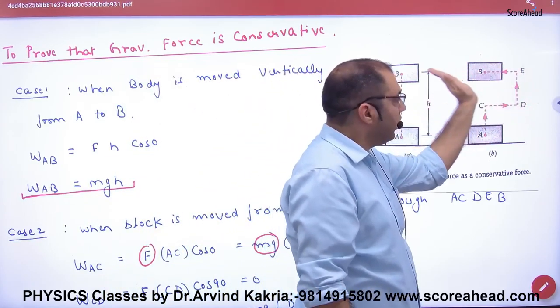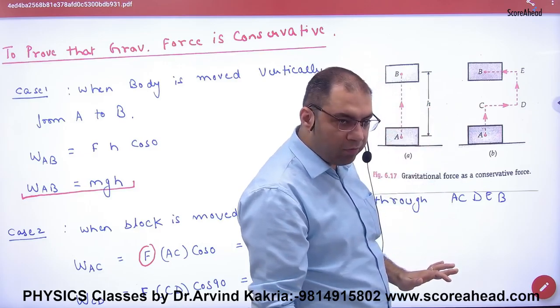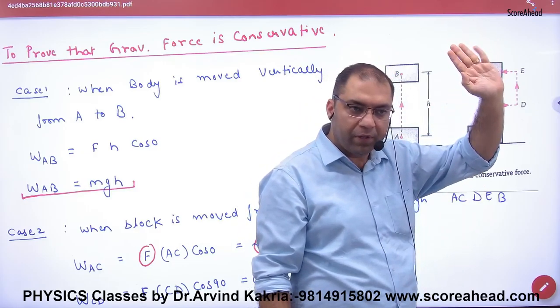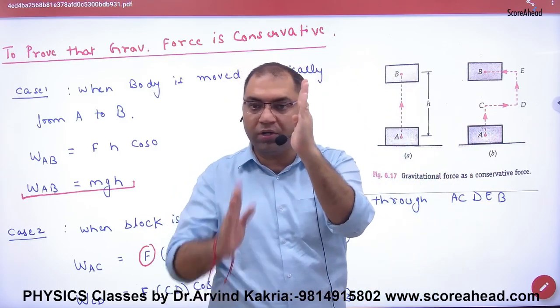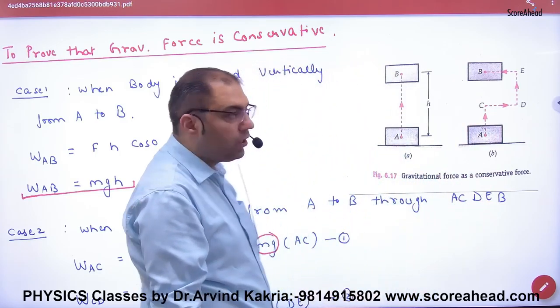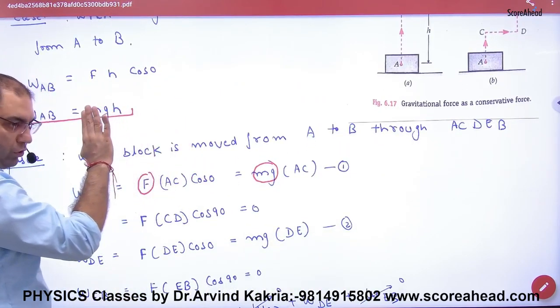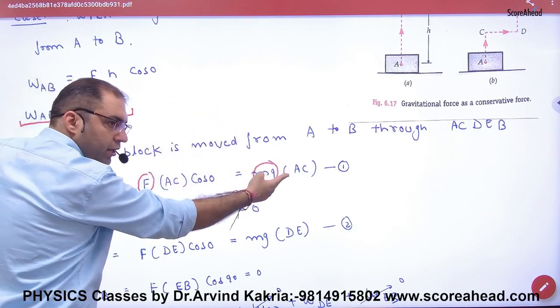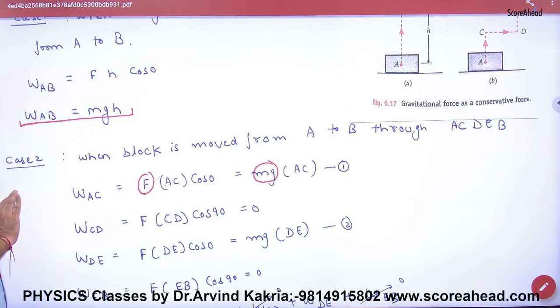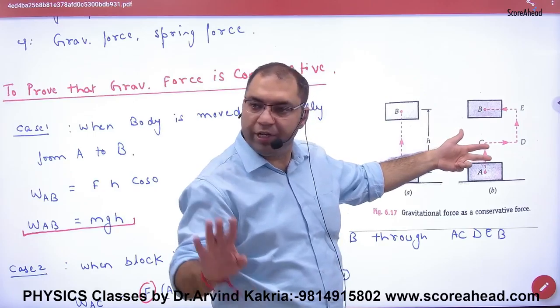Case number two: now I will go A, C, D, E, B. When going from A to C, the displacement is along A to C. The angle between force and displacement is 0, so the work done for segment A to C is force into AC into cos 0, which gives MG times AC.